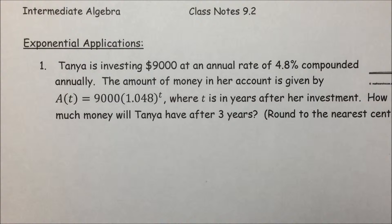This first one deals with interest compounded annually. Tanya is investing $9,000 at an annual rate of 4.8% compounded annually. The amount of money in her account is given by the following function, where T is in years after her investment. How much money will Tanya have after 3 years?